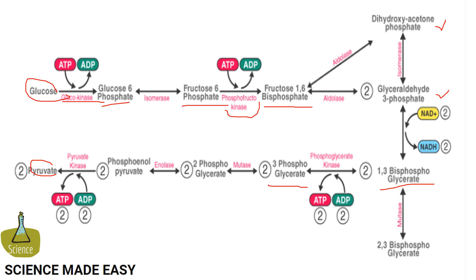In the eighth step, the phosphate of both phosphoglycerate molecules is relocated from the third to the second carbon to yield two molecules of 2-phosphoglycerate by the action of the enzyme mutase.